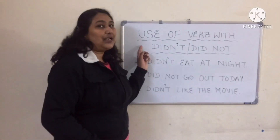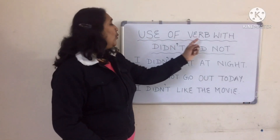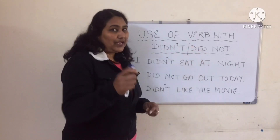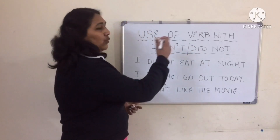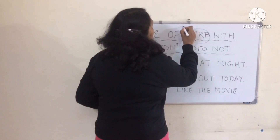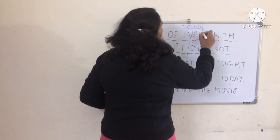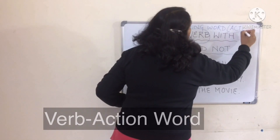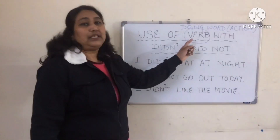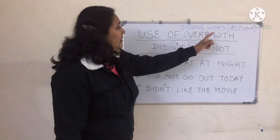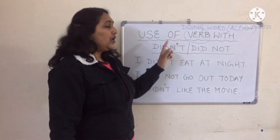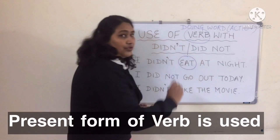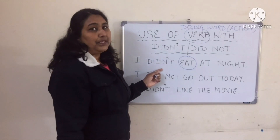Look here everyone. Today, I'm going to tell you the correct use of verb with 'didn't', also called 'did not'. Are you getting that? Good. Now, a verb is a doing word — we also say an action word. And whenever we use an action word, that is a verb, with 'didn't' or 'did not', the present form of verb is used.